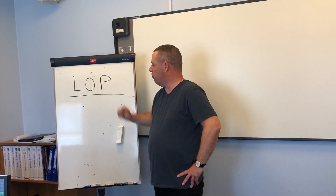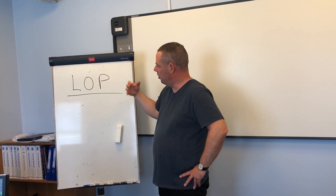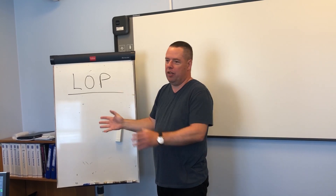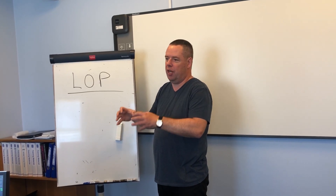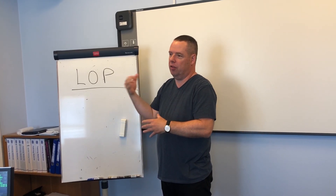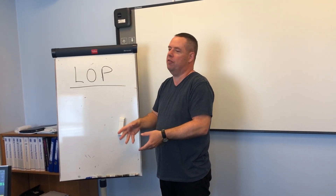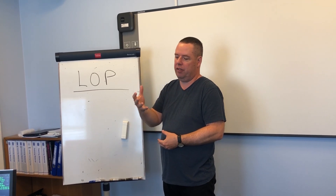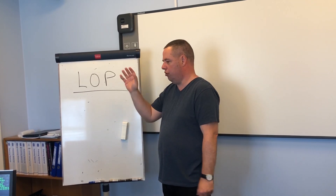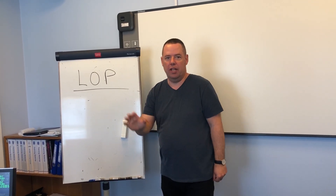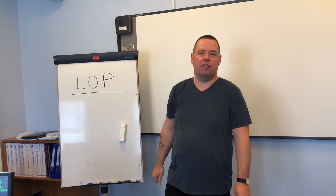LOP is Line of Position — it is where you transfer a bearing you have taken, or a distance you have taken on the radar, or a bearing from a bearing diopter, to the ECDIS. So let's go to the ECDIS.